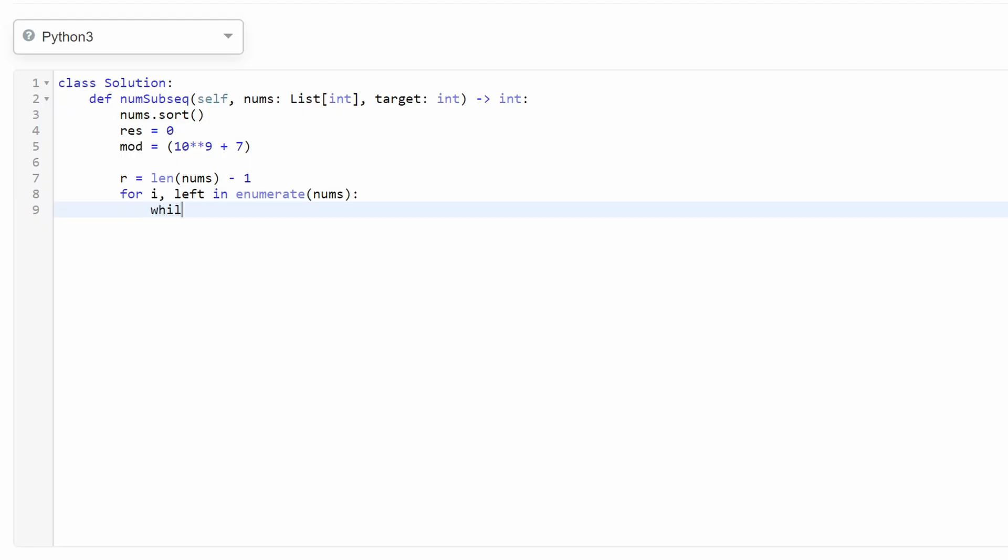So while this is too big, we need to decrement our right pointer. So while the sum, which is left plus nums of right, is greater than or equal to K, and of course, i has to be less than or equal to right, we don't want the right pointer to go too far to the left. But while this is the case, we're going to decrement our right pointer.